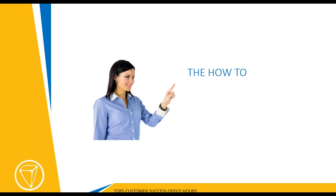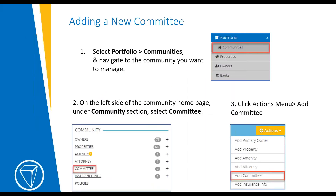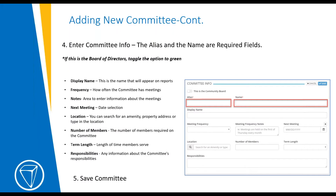Now let's go over the steps and some of the additional features. To add a new committee, you will start by going to your portfolio page, select the community you want to add a committee for, and on the right side of the page navigate to the committee. From the actions button on the top right, you'll select 'Add Committee' from the drop-down menu. On this page, you'll enter the committee information — the alias and the name are the only required fields.